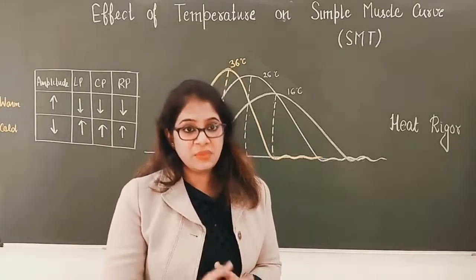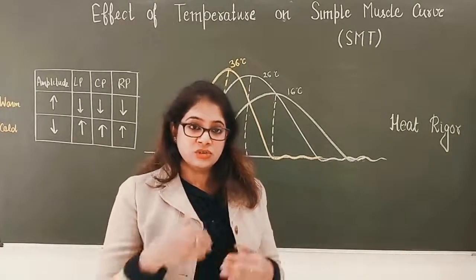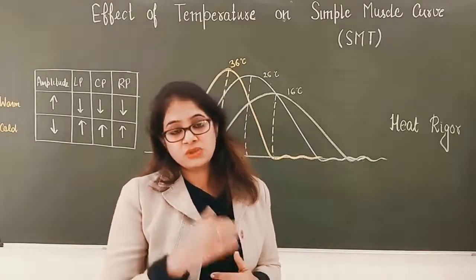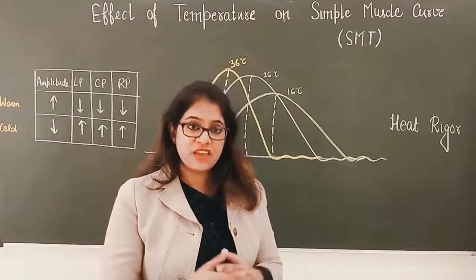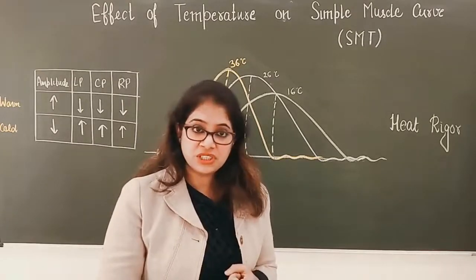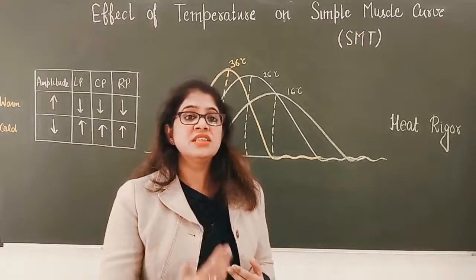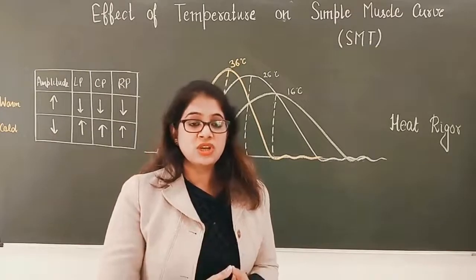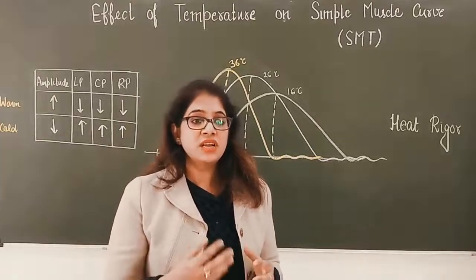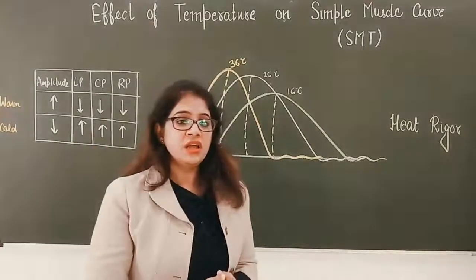Additionally, on increasing temperature, the viscosity of the media in which actin and myosin are contracting decreases. This viscosity was creating resistance for them, so resistance decreases. Because of that, contraction of actin and myosin becomes faster. So with increased temperature there is increased enzymatic activity, decreased viscosity, and decreased resistance around actin and myosin — so they contract more vigorously and faster. The opposite occurs when cold saline is poured.